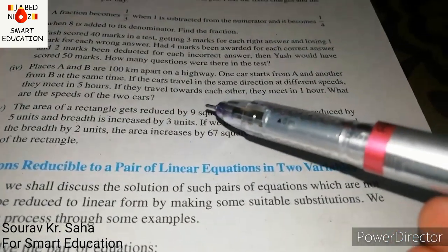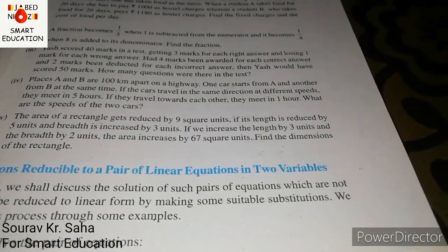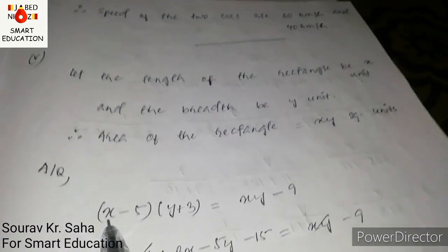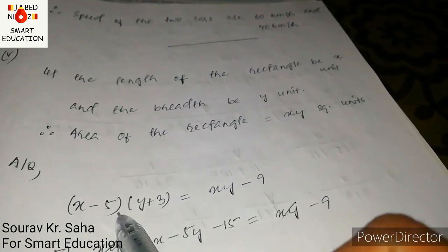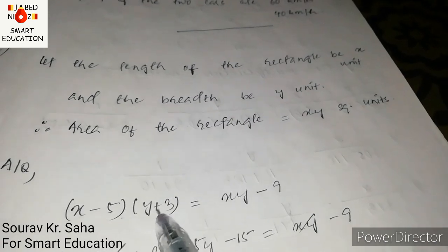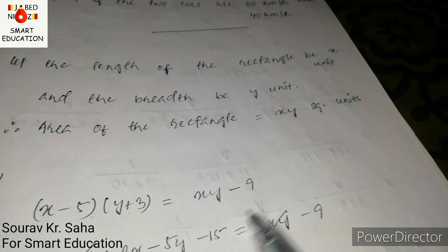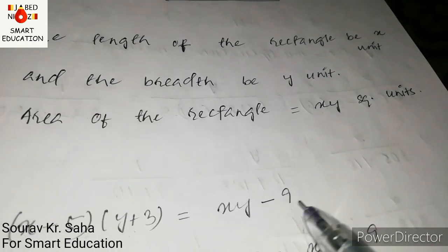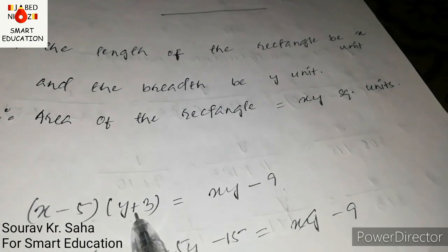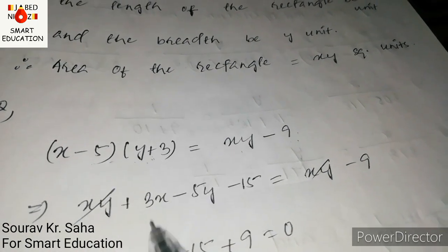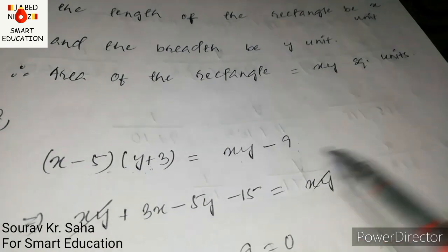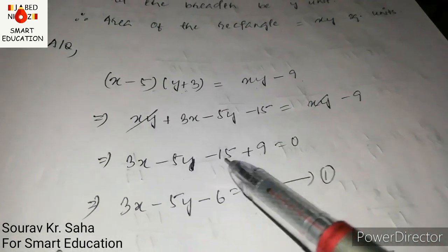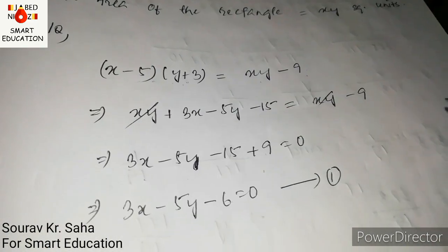For the first condition: the area gets reduced by 9 square units when length is reduced by 5 and breadth increased by 3. So (x − 5)(y + 3) = xy − 9. Expanding: xy + 3x − 5y − 15 = xy − 9. Cancelling xy: 3x − 5y − 15 + 9 = 0, giving 3x minus 5y minus 6 equal to 0. This is equation one.